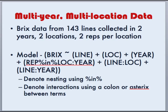Let's start thinking about our multi-year, multi-location data and what kind of model we would like to use. To recap, we have BRICS data from 143 lines collected in two years, two locations in each year, and two reps per location. Our model will look like the following: BRICS is proportional to line plus location plus year plus rep within location-by-year, plus line-by-location interaction plus line-by-year interaction. Note that in R, we can denote nesting using the %in% notation, and interactions using either a colon or an asterisk between terms.